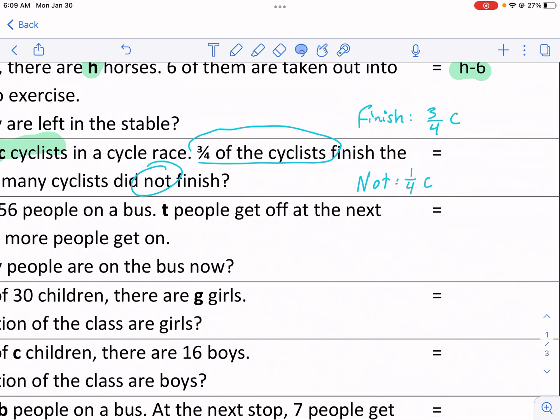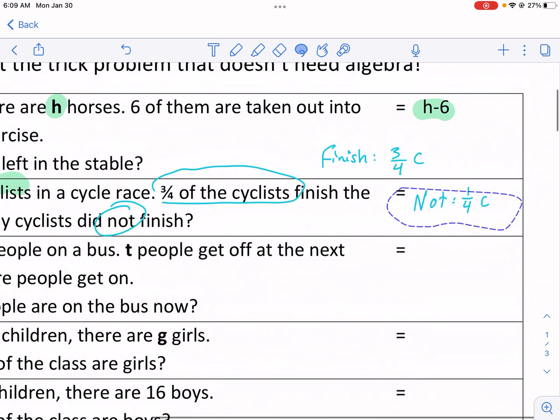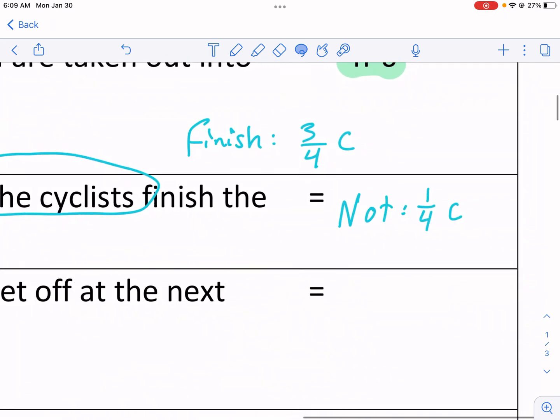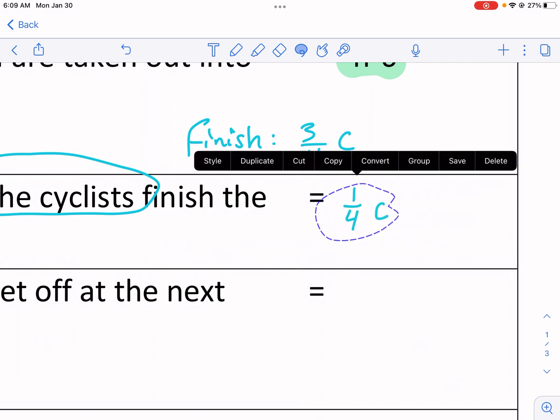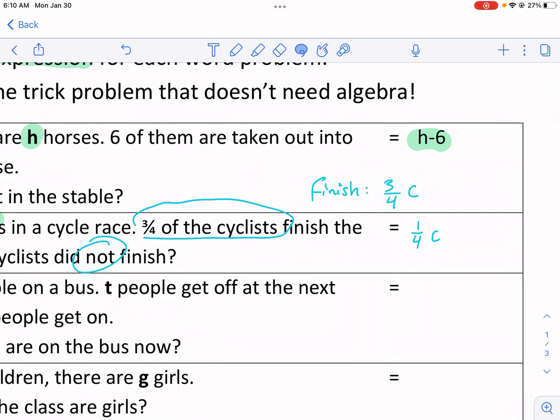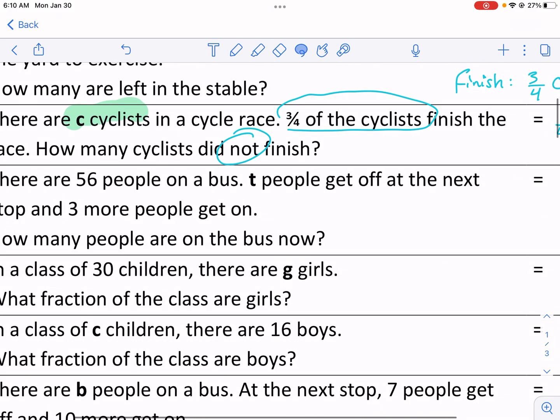So if there were 100 total racers, we would know that 75 finished and 25 did not. But we don't know the total number. It could be 1,000, it could be 500, whatever it is. But this is just an algebraic expression that represents how many did not finish based on the unknown amount. Algebra is all about dealing with the unknown. Here we go.